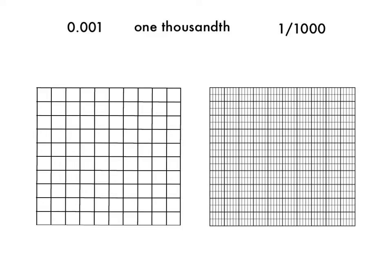So one-thousandth is like shading in just one of those teeny-tiny rectangles. I also could imagine that in my hundredths grid, inside each of these squares is ten equal size pieces. And if I'm shading in one-thousandth, I'm just shading in one of those teeny-tiny equal size pieces. So even though this grid is made up of a hundred equal size pieces, I can still represent one-thousandth on it.